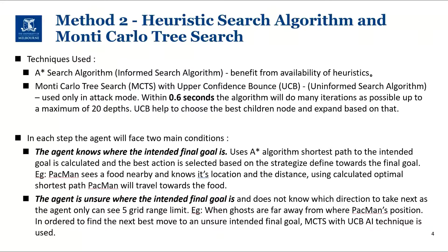Within 0.6 seconds, the algorithm will do many iterations as possible up to a maximum 20 depth. Each iteration will start from the current state and select the node to directly roll to the leaf node. Based on the state of the node, the cost will be assigned using this method. It will build the search tree to find the path once it goes. UCB helps to choose the best children node and expand based on that.